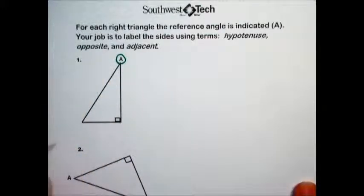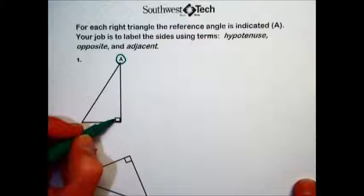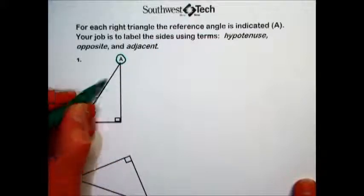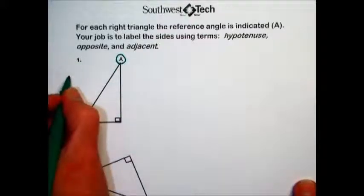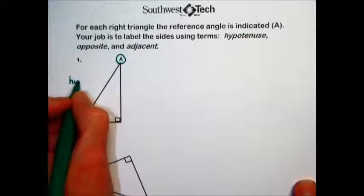We will then, once we know where our reference angle is, locate and label the hypotenuse. We always do this first. It is located directly opposite the right angle, so here's our right angle. That means this longest side here is the hypotenuse.